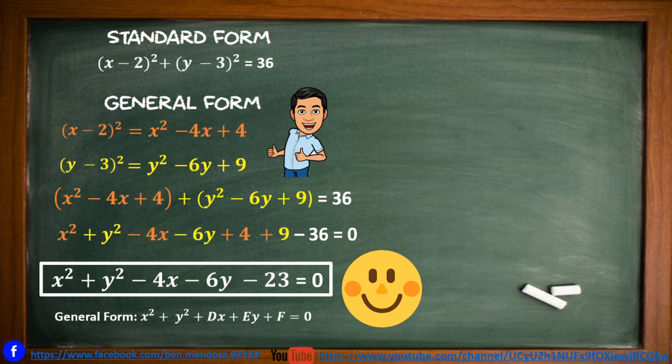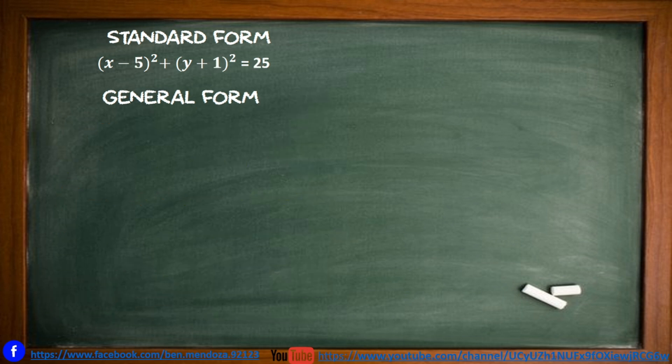Notice we have followed the general form: x squared plus y squared plus dx plus ey plus f equal to 0. Let's try Example 2: the quantity of x minus 5 squared plus the quantity of y plus 1 squared is equal to 25.